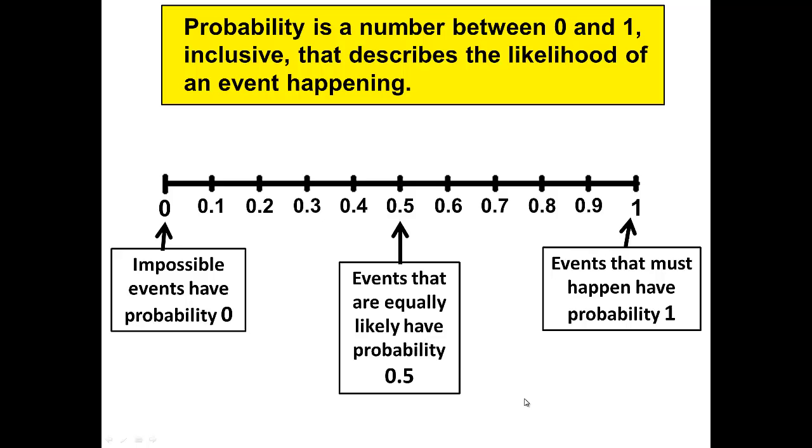Events that are equally likely have a probability of 0.5 or 1 half. That would be like flipping a coin and getting a head, or flipping a coin and getting a tail. They're equally likely to happen. That would be like the probability when having a baby of having a boy, or vice versa of having a girl. That would be the probability of answering a true false question correctly.